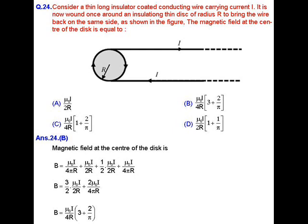Now if we simplify the magnetic field, we will get B equals 3 by 2 mu naught I upon 2 R plus 2 mu naught I upon 4 pi R. Further we will get mu naught I upon 4 R bracket 3 plus 2 upon pi. So the correct answer here will be option B.